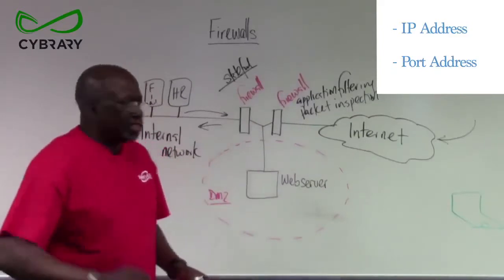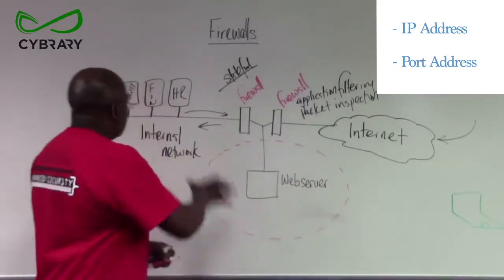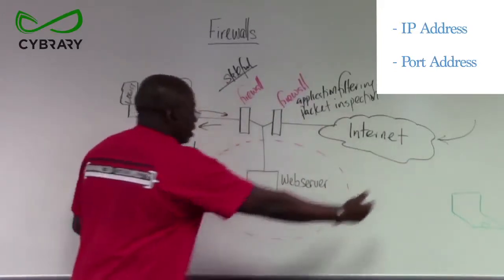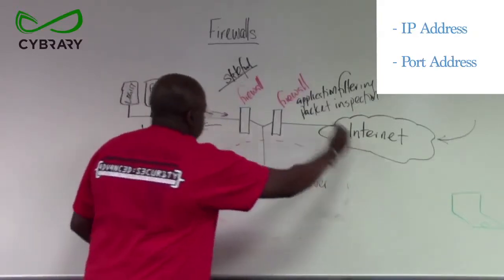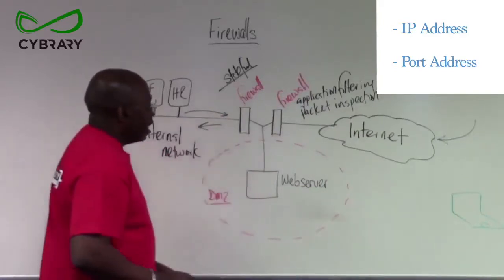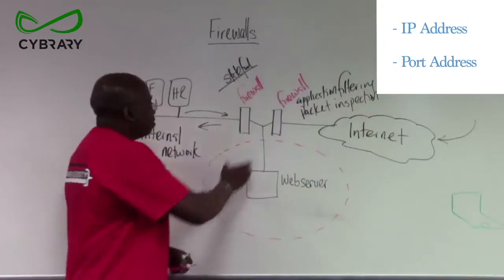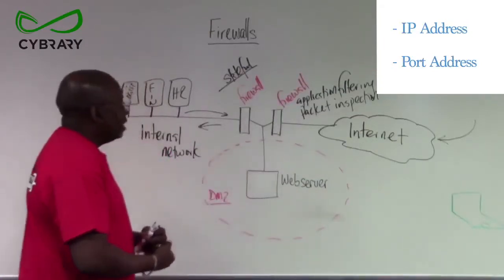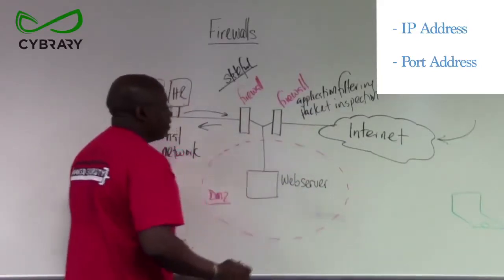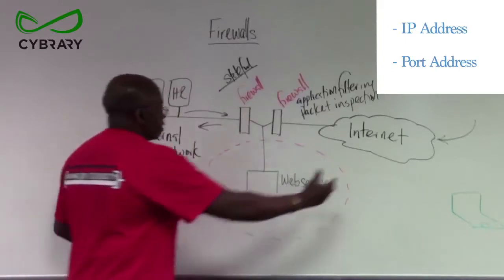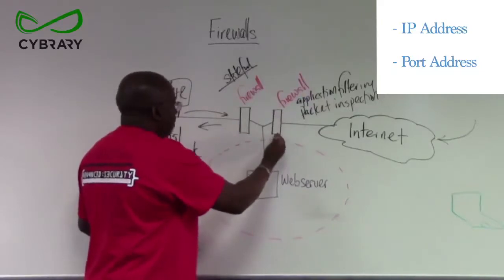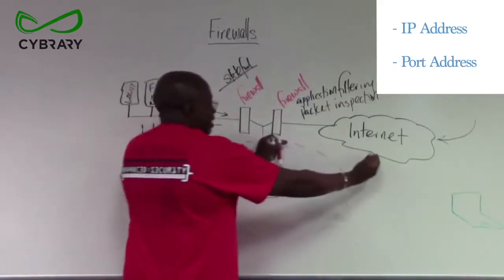Users on the internal network can access the DMZ, and users working from home or remotely can also get there. However, care is taken to ensure they cannot get into the internal network using these firewalls. When malicious people attack your network, what they try to do is cripple your firewalls to defeat your defenses. This firewall exemplifies the definition of the first line of defense — traffic coming from the internet meets the firewall first, which sits between your internal network and the external network.